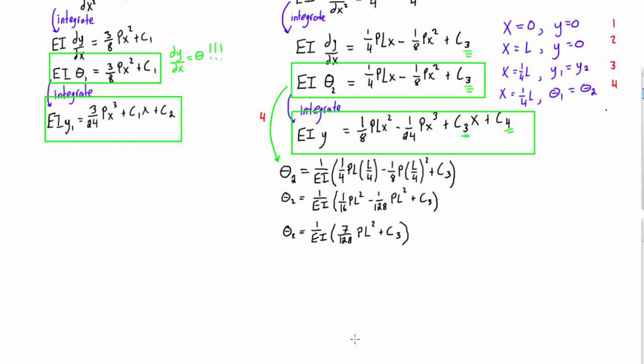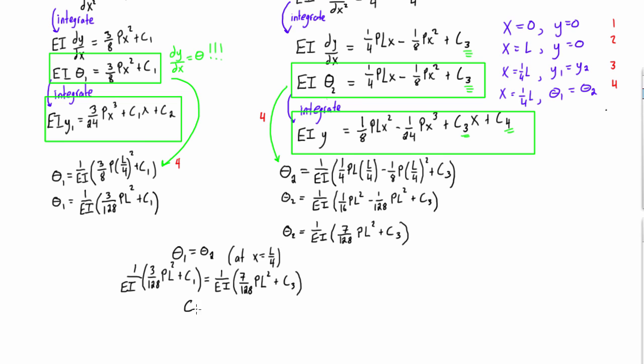What else can we do is we can throw in boundary condition 4 into this expression. And because we've plugged in l over 4 for x, then we can compare them. Theta1 is equal to theta2. So we get this expression here for C1 that we're going to want to come back and revisit once we get some other information. What else can we do here is looking at this guy, we can plug in boundary conditions 1 and boundary conditions 3.